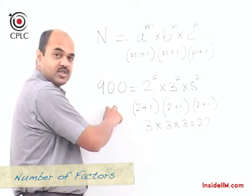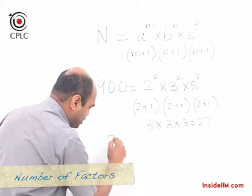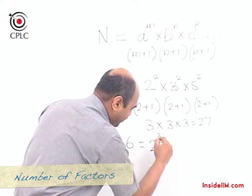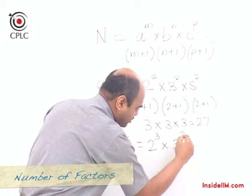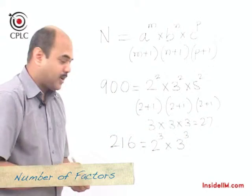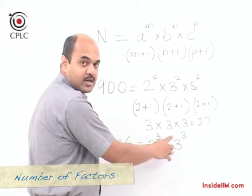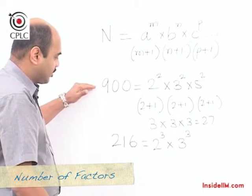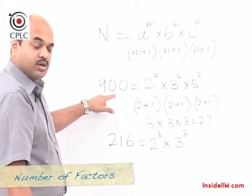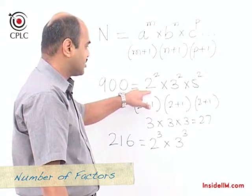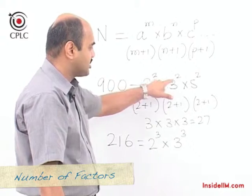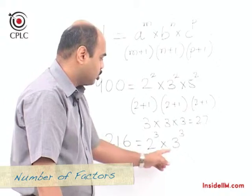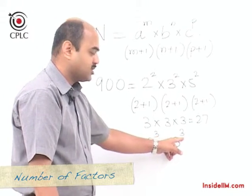If instead of a perfect square we take a perfect cube, for example 216, when we express the number in terms of prime factors, the prime factors would always have powers which are multiples of 3. To summarize: perfect squares always have prime factors with even powers, and perfect cubes always have prime factors whose powers are multiples of 3.